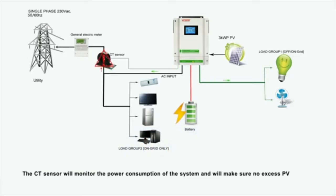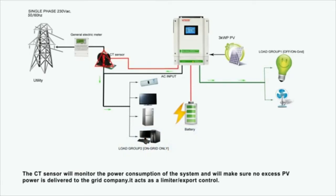The CT sensor will monitor the power consumption of the system and will make sure no excess PV power is delivered to the grid company. It acts as a limiter or export control.